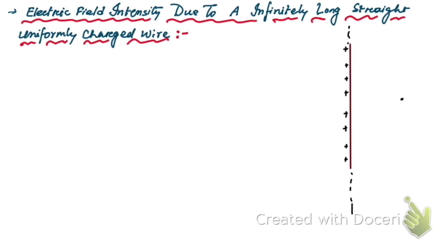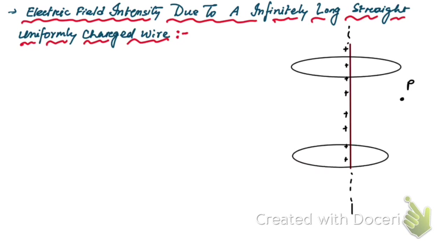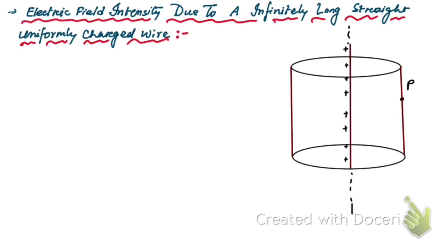We need to find the electric field at point P due to this infinitely long charged wire. In order to find the electric field at this point, we assume a Gaussian surface, which must be cylindrical in this case. This cylindrical Gaussian surface passes through the point P.